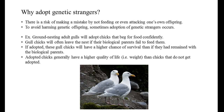So why adopt genetic strangers? There is a risk of making a mistake by not feeding or even attacking one's own offspring. To avoid harming genetic offspring, sometimes adoption of genetic strangers occurs. For example, ground-nesting adult gulls will adopt chicks that beg for food confidently. Gull chicks will often leave the nest if their biological parents fail to feed them. If adopted, these gull chicks will have a higher chance of survival than if they had remained with their biological parents. Adopted chicks generally have a higher quality of life than chicks that do not get adopted.